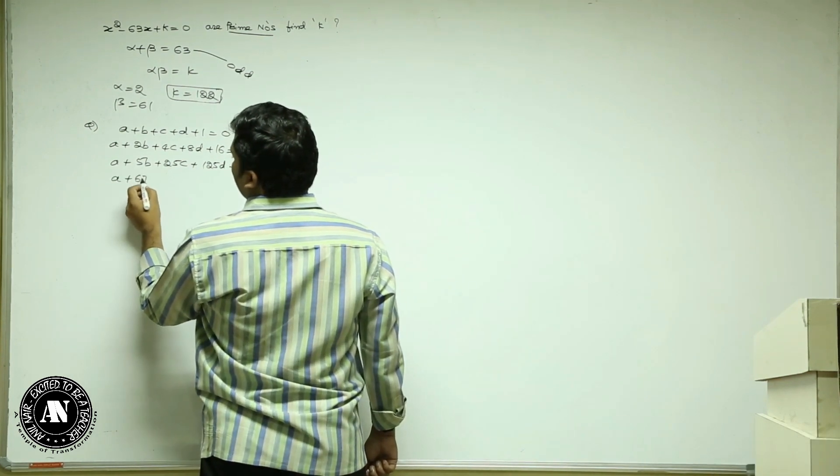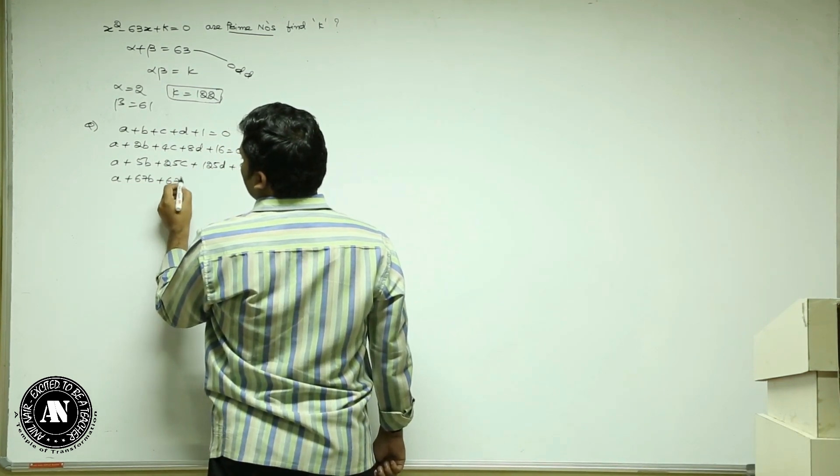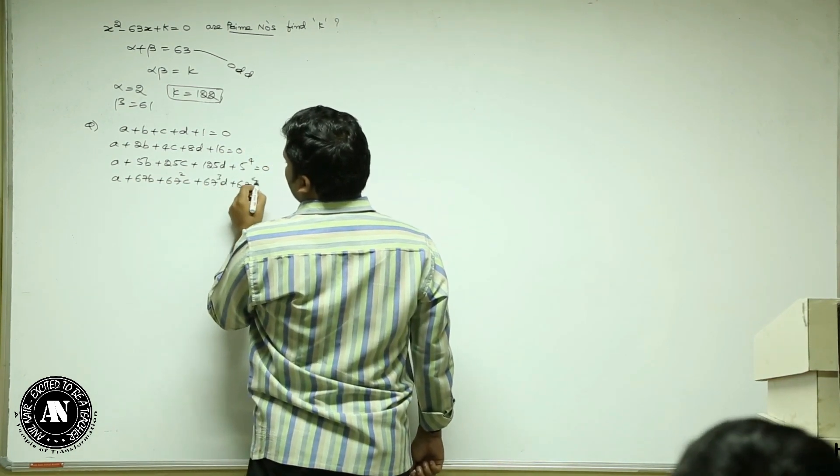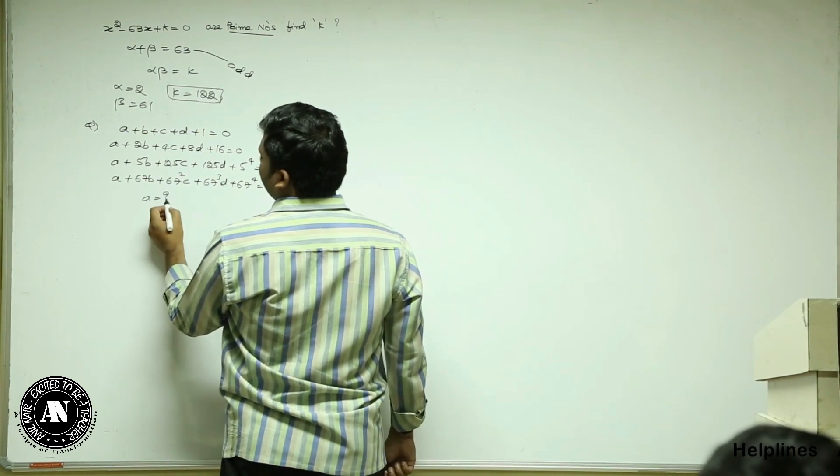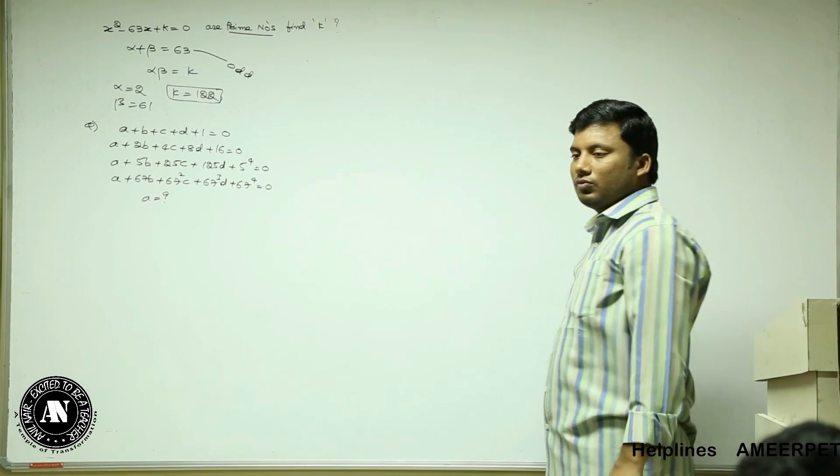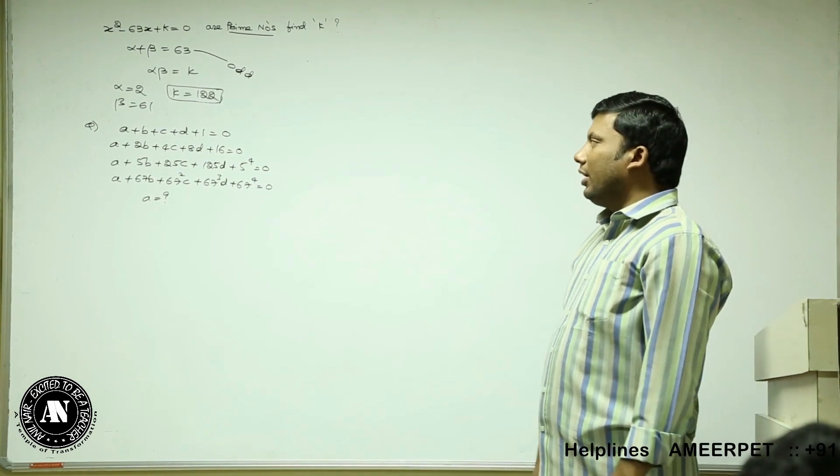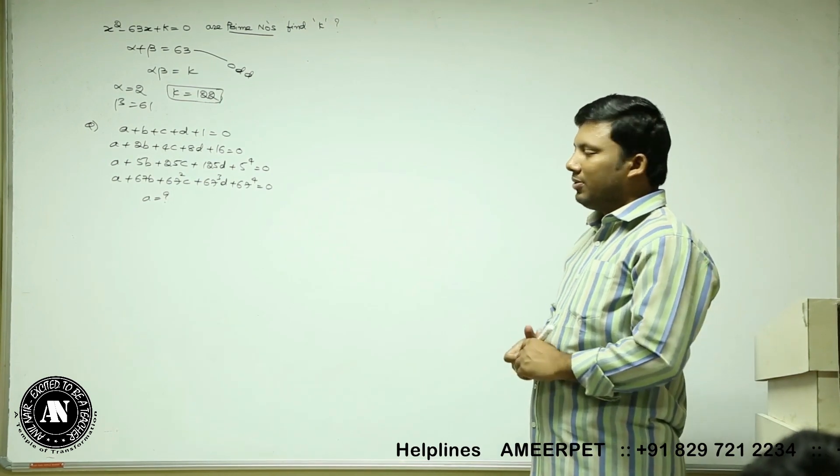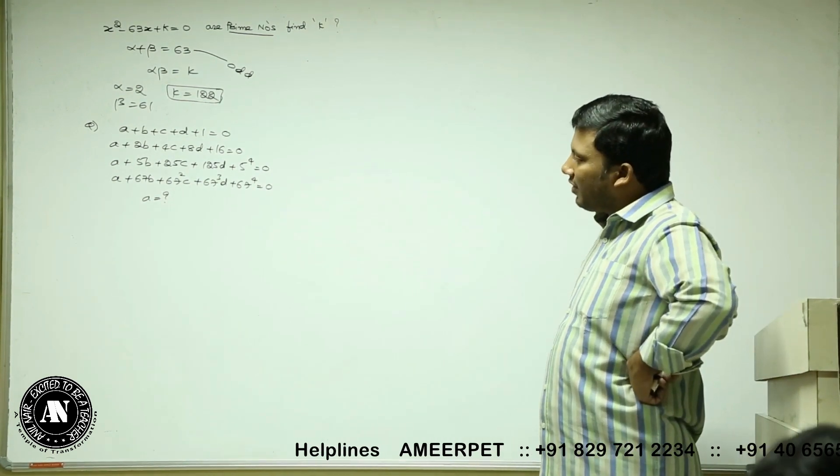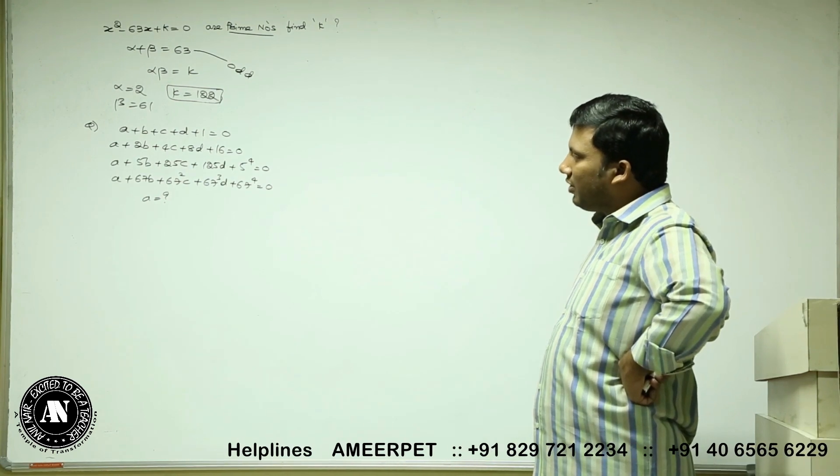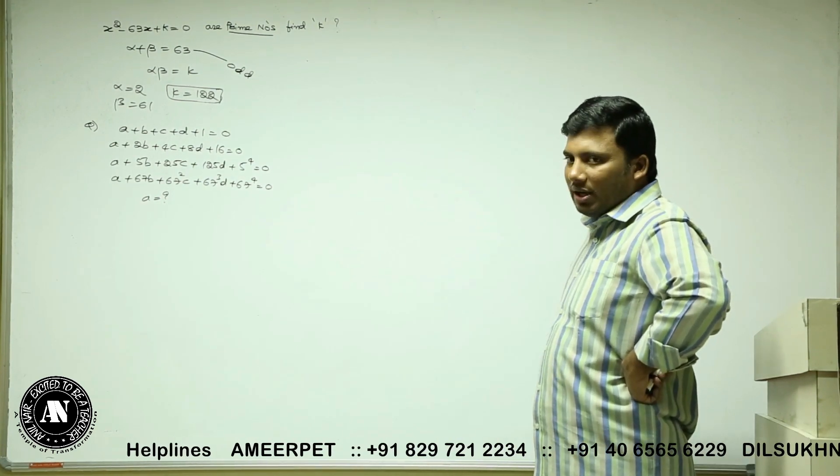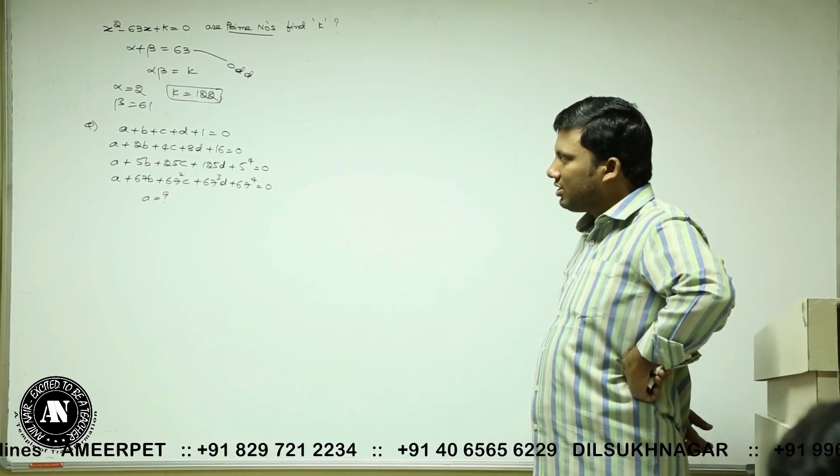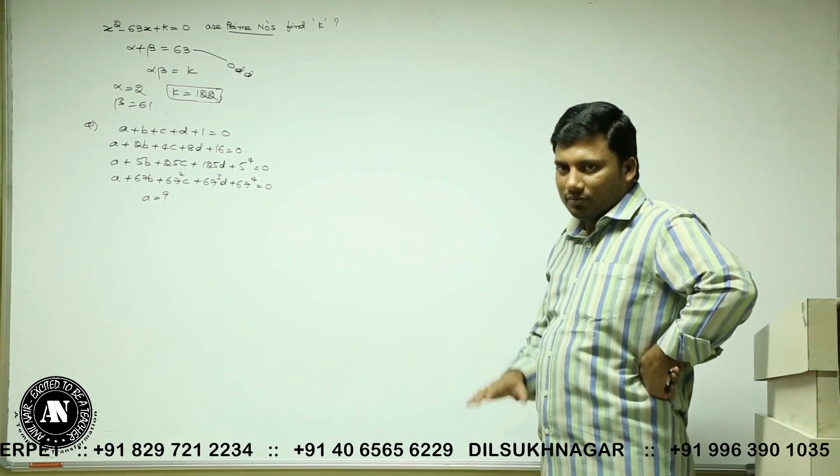A plus 67B plus 67 squared C plus 67 cubed D plus 67 to the power 4 equals 0. A equals C.